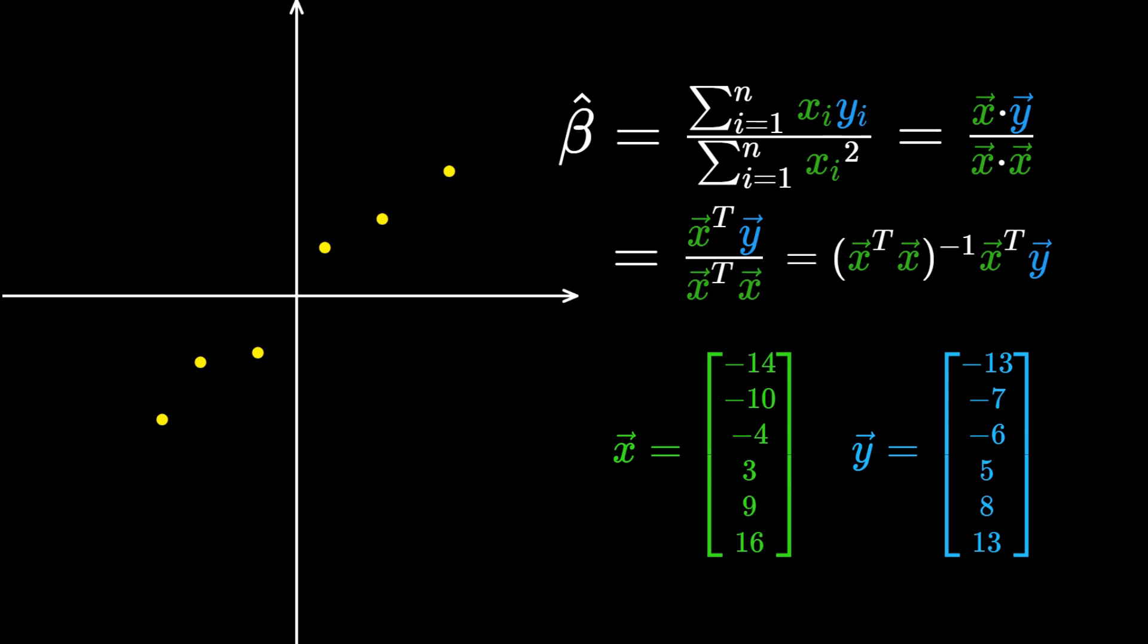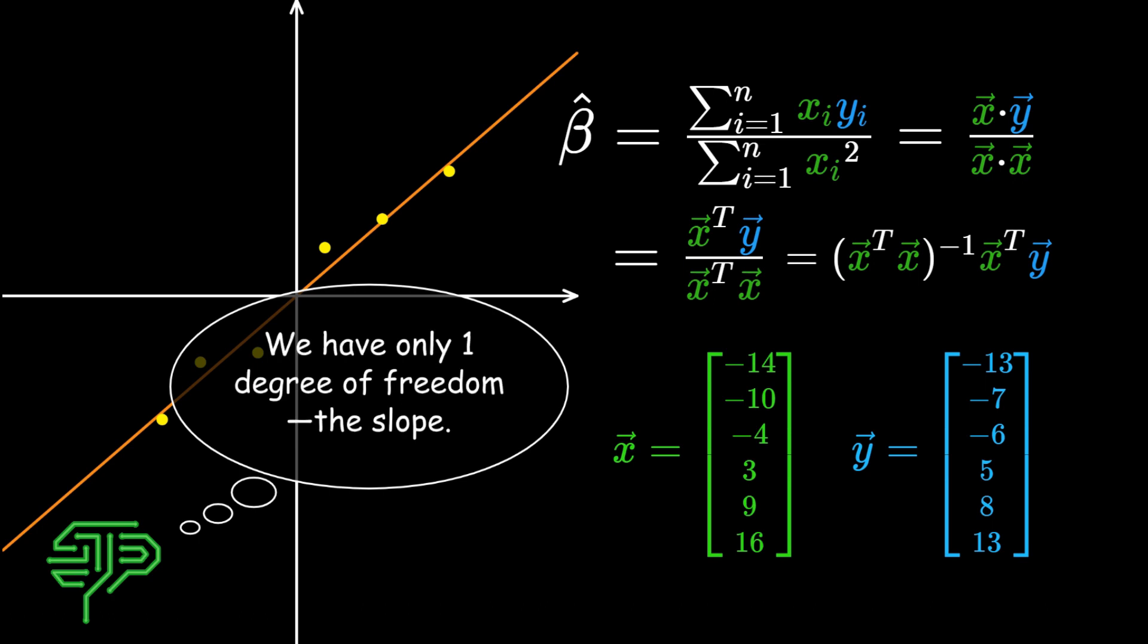Since we've shifted our data, the regression line is guaranteed to go through the origin, so we don't need to worry about the offset beta naught. We have only one degree of freedom, the slope, and our data matrix x is just a column vector.